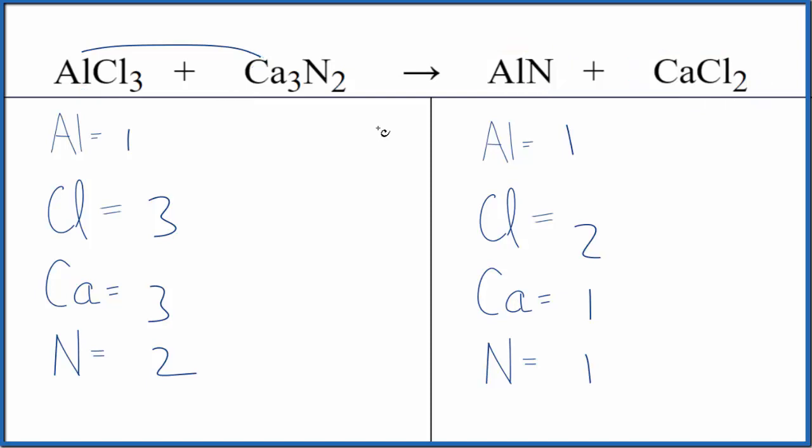So let's balance the equation. I've already counted the atoms up here. Let's see what we could do. It's probably a good idea to try to get the chlorines to be an even number on this side.